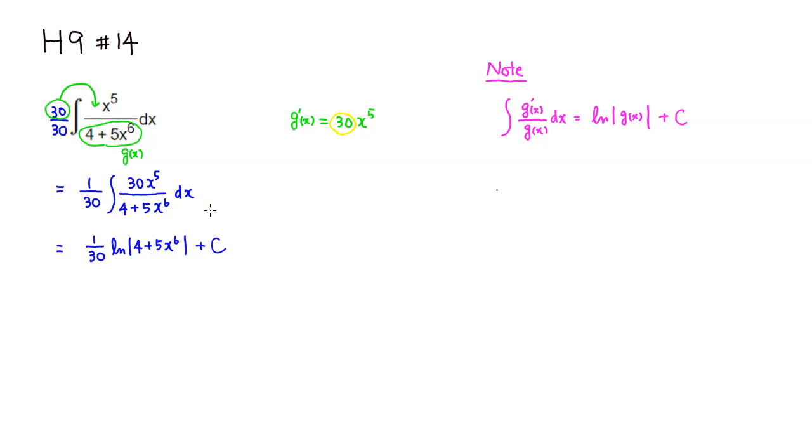Since 4 plus 5x to the 6th power is never negative for any real number x, if you want to replace the absolute value with a set of parentheses, it would not be a problem because it's not going to really make any difference. So let's type it in.